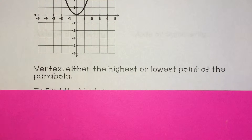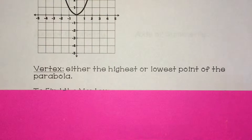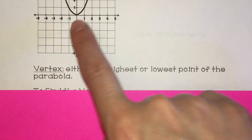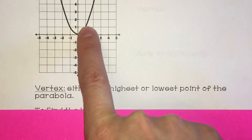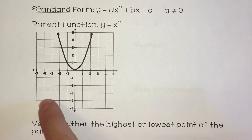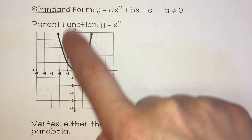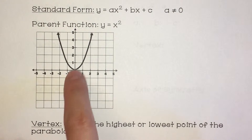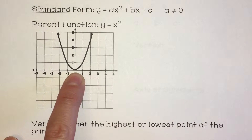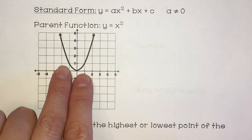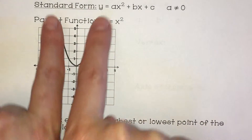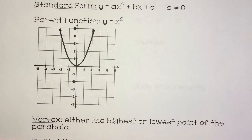The vertex is either the highest or the lowest point of the parabola — this is where the parabola bends. So this would be the vertex, at the bottom here. If it was the other direction, it would be at the top. Right now it's the lowest point because it's the bottom of the parabola. These arrows just mean the graph will continue going up and out forever.